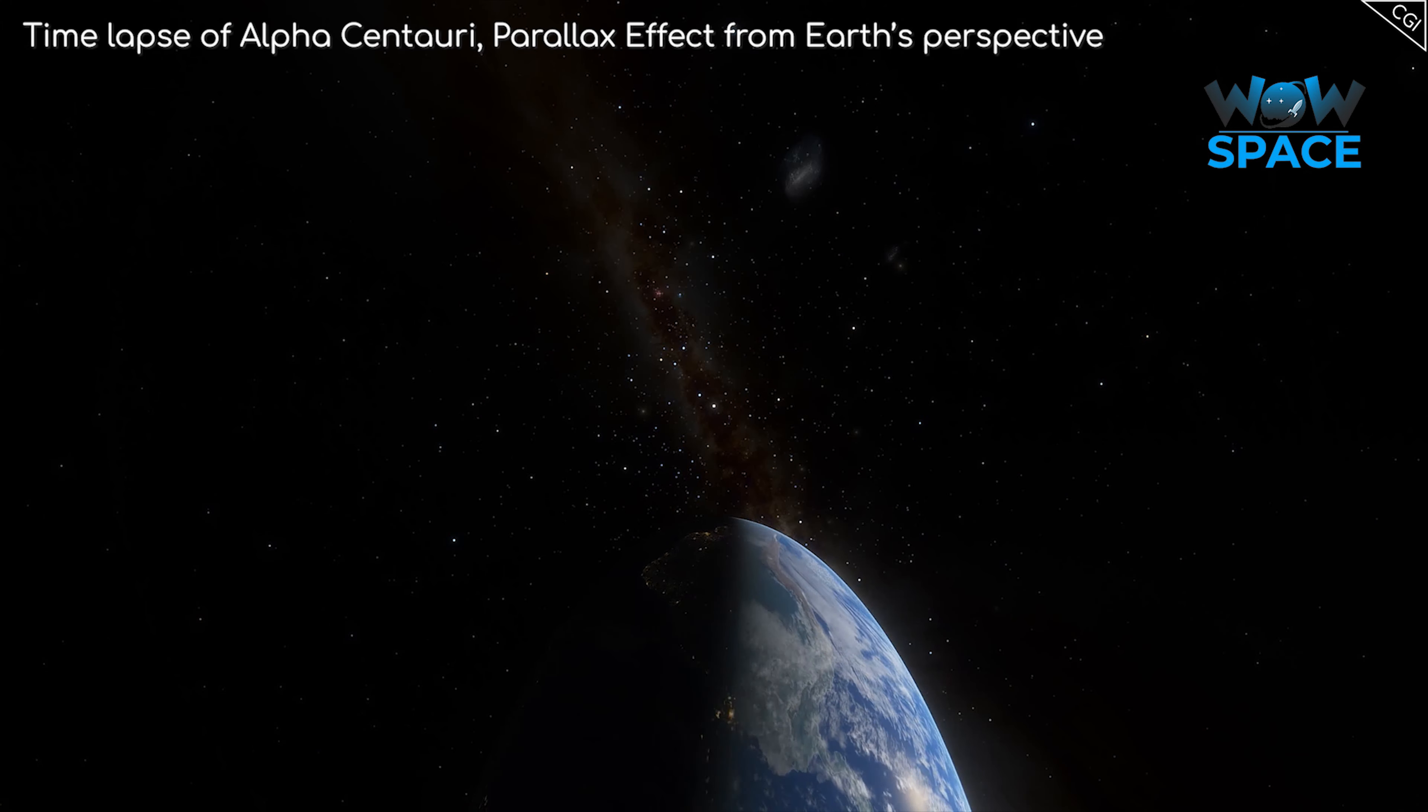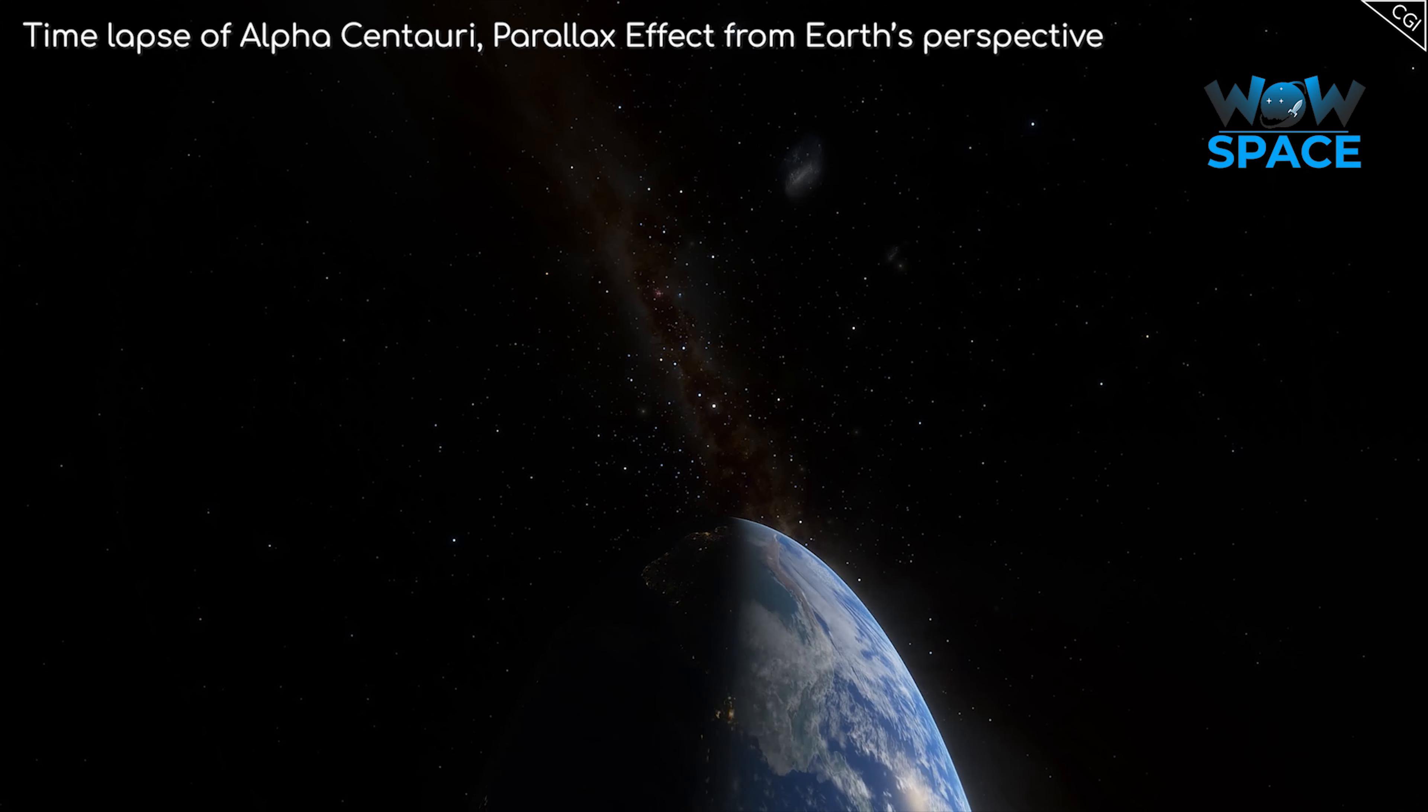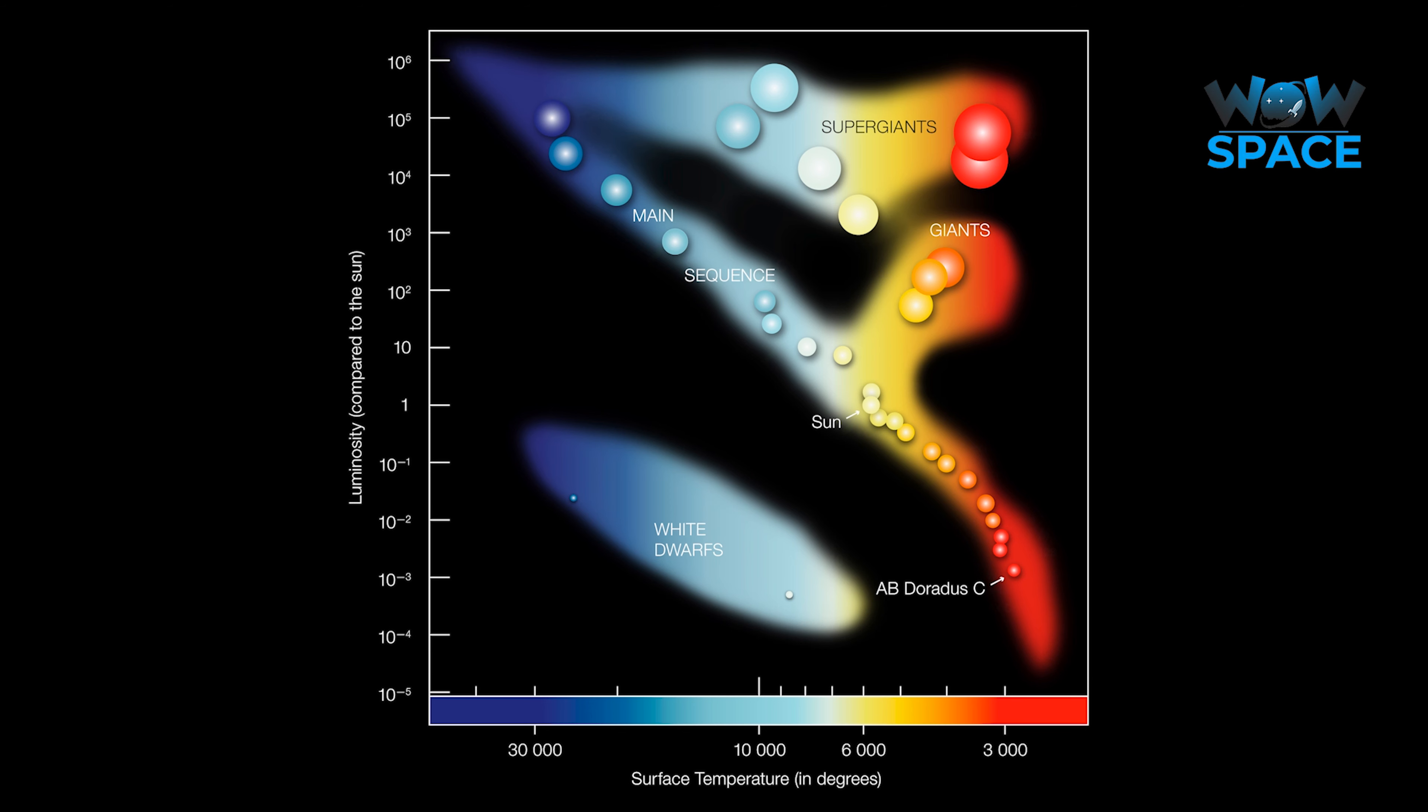But thankfully there are very clever scientists out there that have come up with another method to judge distances, without having to use trigonometry. Although it should be mentioned that this method is slightly less accurate, it's just simply the best we've got. It seems that stars tend to follow a pattern, which can be seen on this chart.